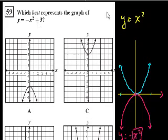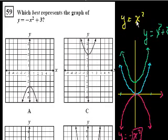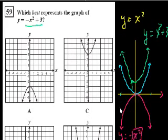What happens if you do plus or minus 3? If you have y equals x squared plus 3, every y value for every given x is just 3 higher, so it shifts the graph up by 3. Similarly, if you go from minus x squared to minus x squared plus 3 — which is what they gave us in the problem — you're just going to shift the downward-opening graph up by 3. So it's going to take this minus x squared graph and shift it up, looking something like that.